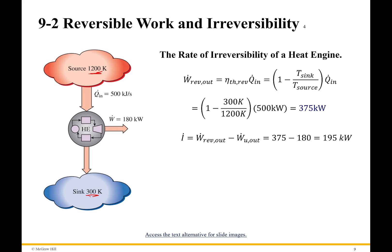The next thing we're going to learn about is what's called second law efficiency. I want to go ahead and show it to you real quick. Our second law efficiency is simply comparing how I did to how I could do in the best of circumstances. So I had 180 kilowatts of power, and I could have had 375 kilowatts of power. That would be 180 divided by 375, which is about 48%.